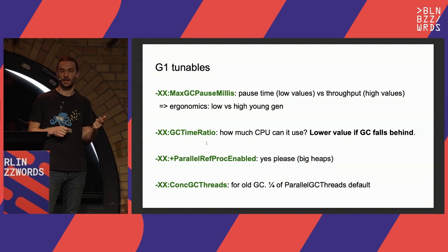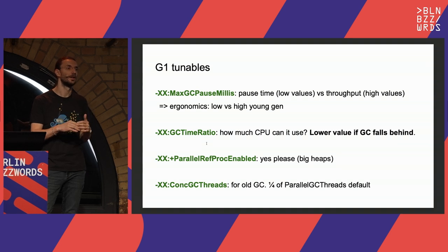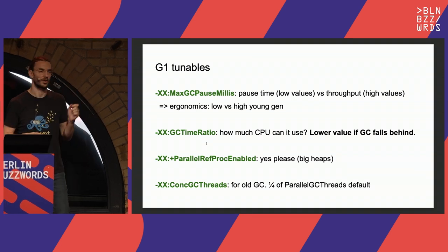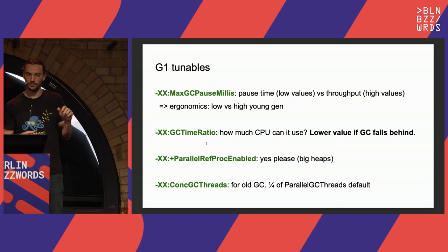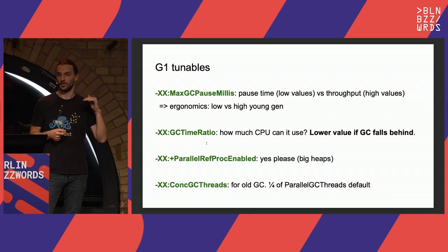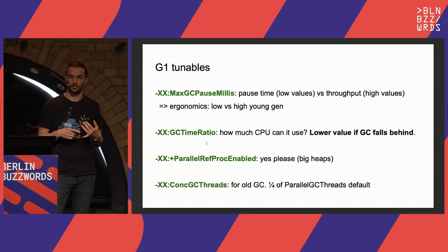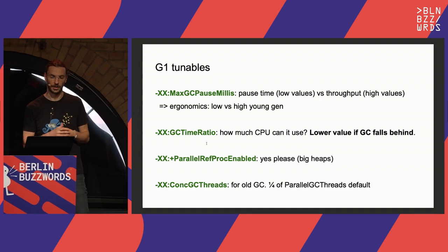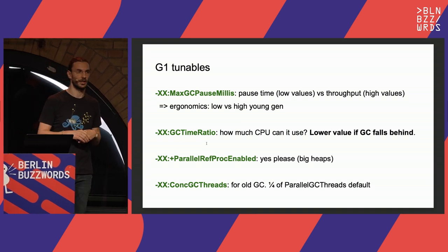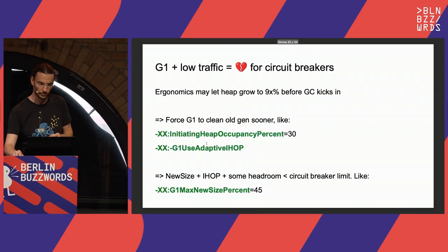G1 is adaptive and the main knob is the target pause time. If collection took less than the target, G1 tends to make the young generation larger since it's more efficient to collect — so this effectively becomes a knob between latency and throughput. If GC falls behind, look at the GC time ratio which dictates how much CPU GC can use. Processing references in parallel is generally a good idea. The number of concurrent GC threads defaults to one-fourth of the parallel GC threads; for high traffic it may be worth increasing.